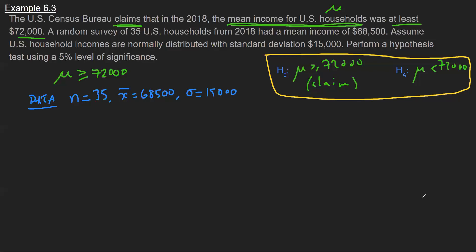So what we have is we have normality, and I know that sigma is given. So what this is telling me is that I'm going to conduct a Z test.